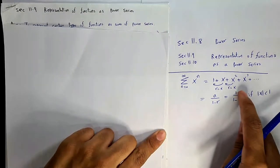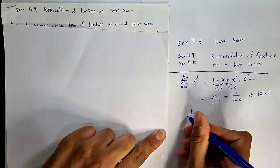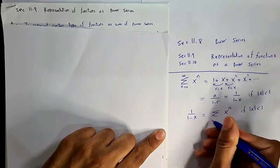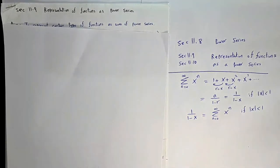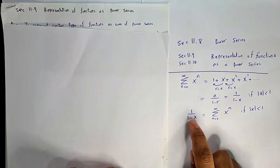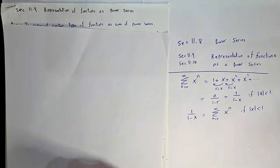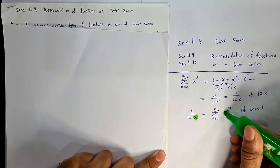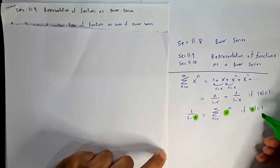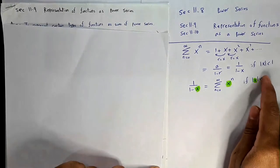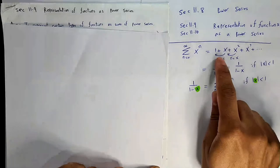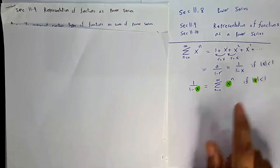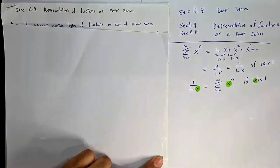Writing it the other way: 1/(1-x) = Σ(n=0 to ∞) xⁿ, if |x| < 1. Here we represent the function 1/(1-x) as a power series on this interval. The key pattern is: we need 1 over (1 minus whatever), then plug that expression into the series. The condition |x| < 1 is very, very important — if you don't have it, the series diverges.